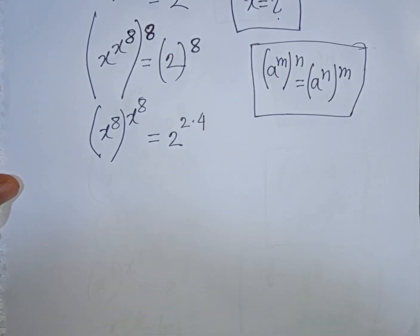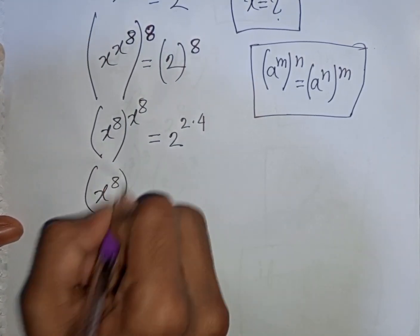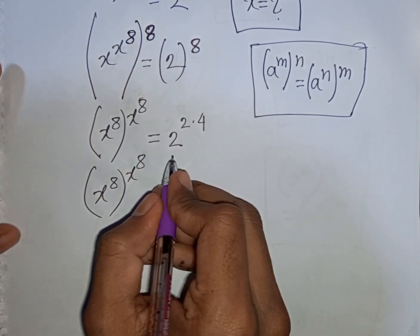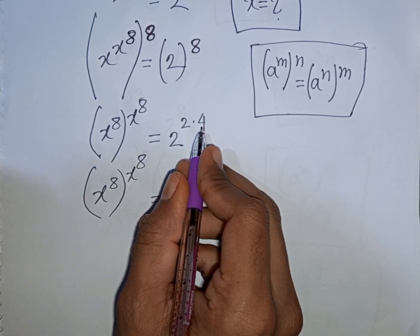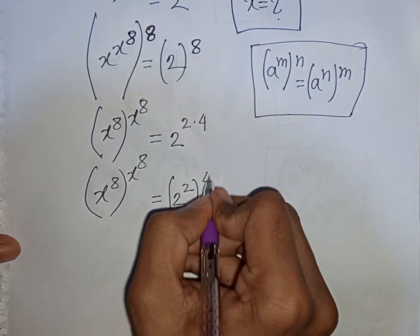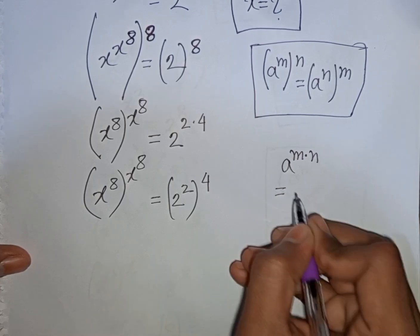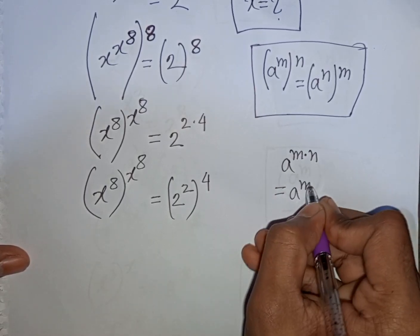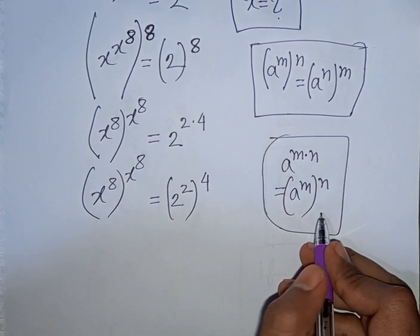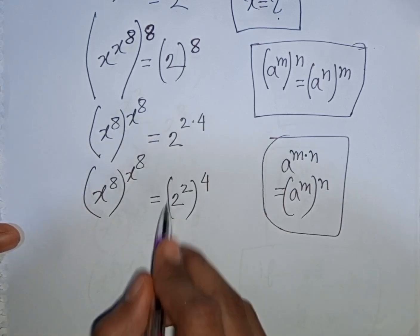We can write x power 8, bracket power of x to the power 8, is equal to 2 power of 2 times 4, which can be written as 2 power 2, bracket power of 4. According to the exponential rule that a power m times n is equal to a power m bracket power n, so 2 power 2 times 4 means it will be 2 power 2 bracket power of 4.